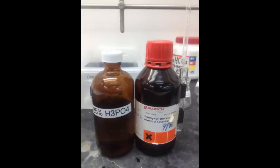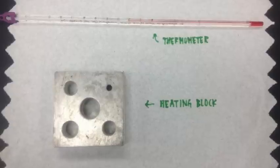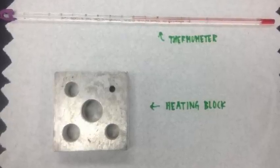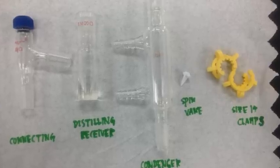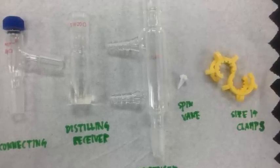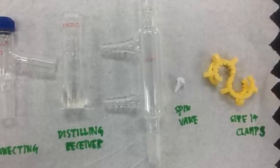Chemicals used in this lab include 2-methylcyclohexanol on the right bottle and 85% phosphoric acid on the left bottle. Anhydrous sodium sulfate is used as drying agent. Equipment includes thermometer, heating block, connecting distilling receiver, condenser, spin vane, and size 14 clamps.